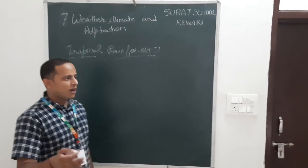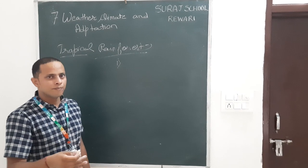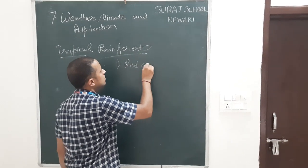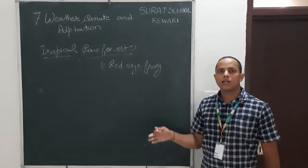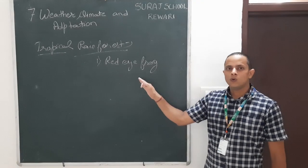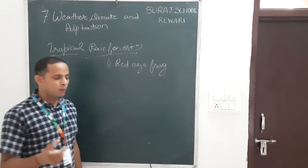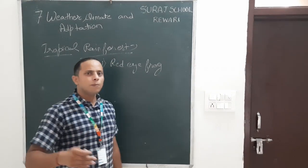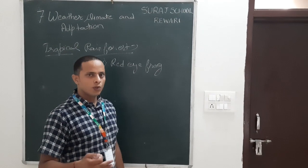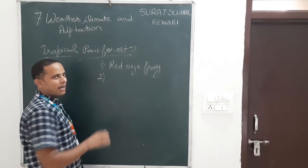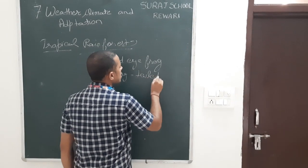So to survive, the animals have to adapt themselves according to the climate. For example, a red-eye frog adapts itself to climb up on the tree, so they climb up in the tree and protect itself. Also, the long-tailed macaque, a species of monkey, mostly lives on trees. Rarely they come down because they get all their food on the plant or on the tree.